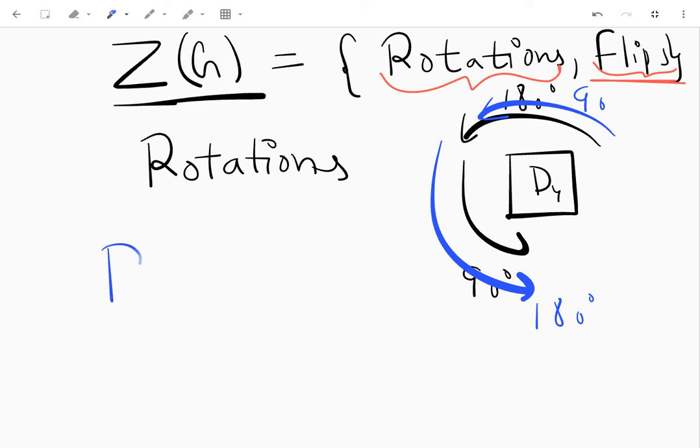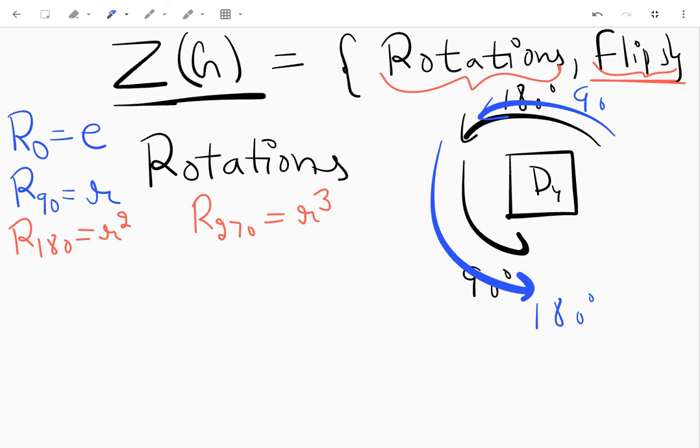Now do all the rotations commute with flips? That we have to find out. Basically what we have to find out is what kind of rotations. Let me clear this notation: r_0 I'm writing as e, r_90 is my r - oh my bad, wait, this is e. This is r, r_180 is r squared, and r_270 is r cubed. Just to make it clear - in books it is written differently - so there should not be any confusion.